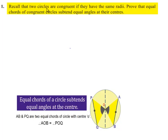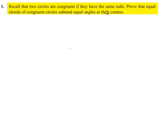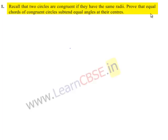Moving on to question number 1. Recall that two circles are congruent if they have the same radii. Prove that equal chords of congruent circles subtend equal angles at their centers.